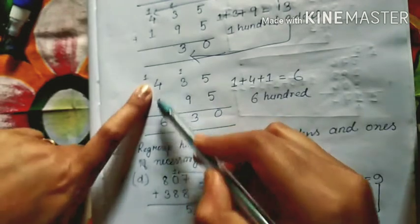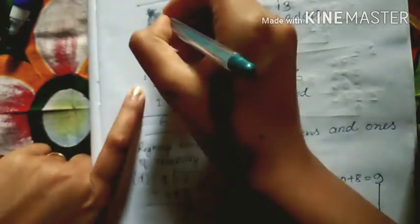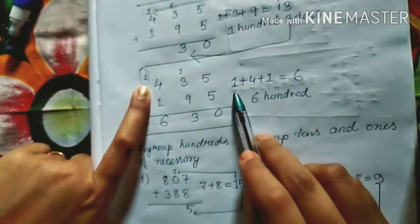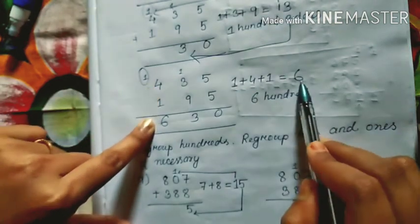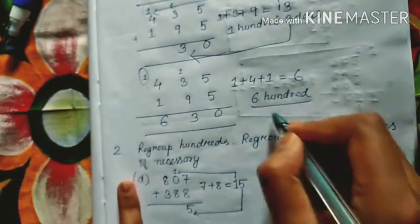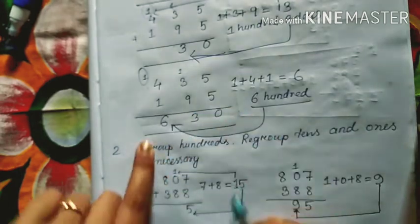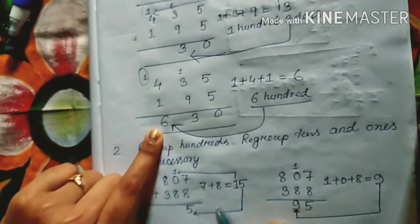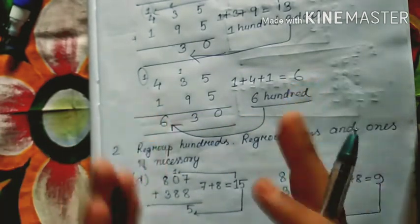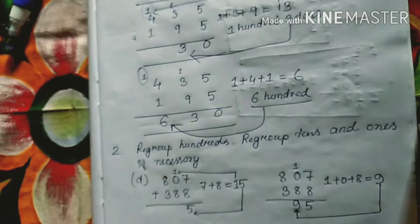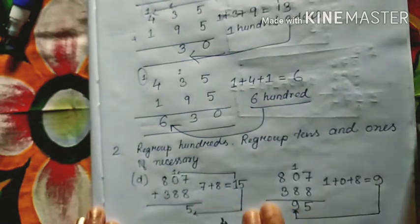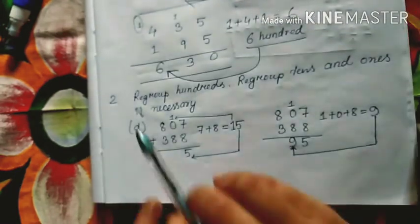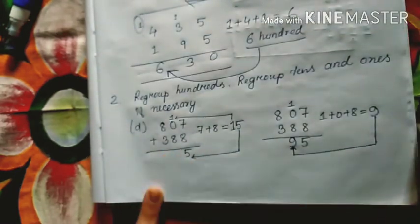At last we solve the hundreds place. We already have 1 carried, so we add that: 4 plus 1 plus 1 equals 6, so 6 goes in the hundreds place. Like this, you can solve the other problems as well, since they are all similar.